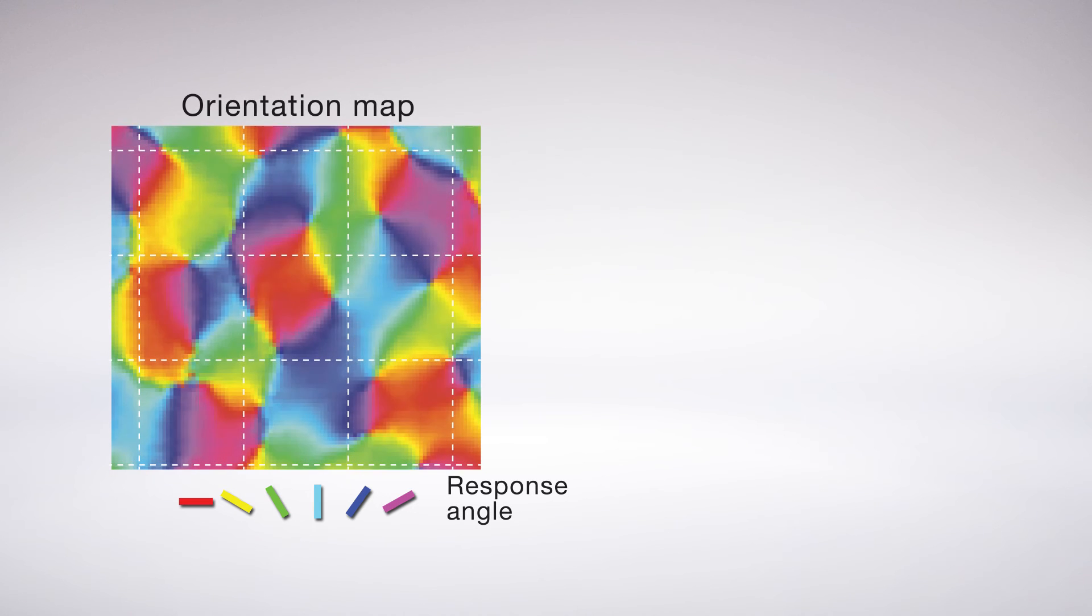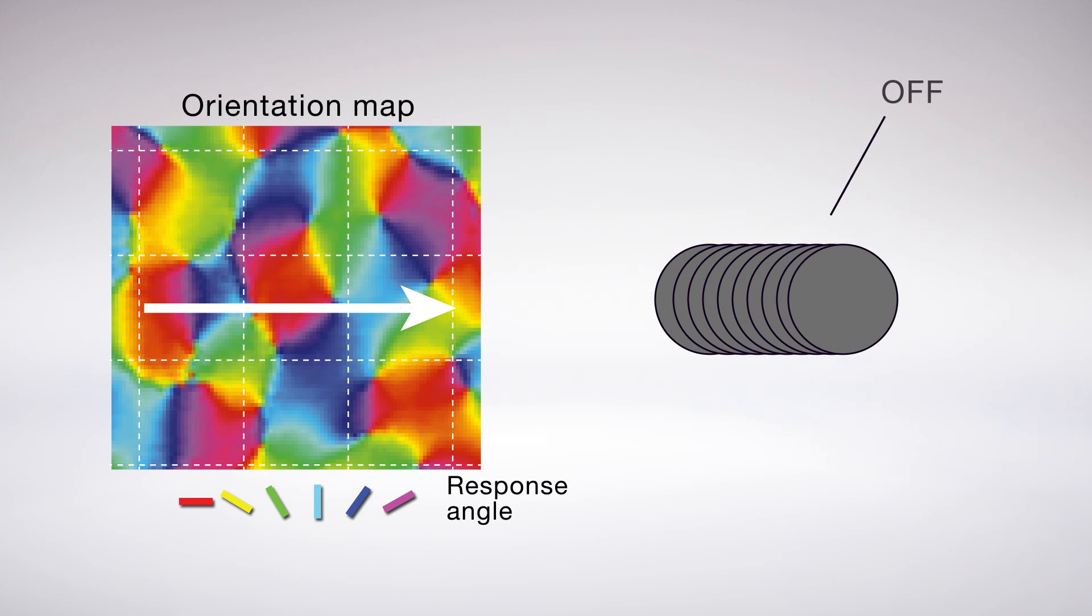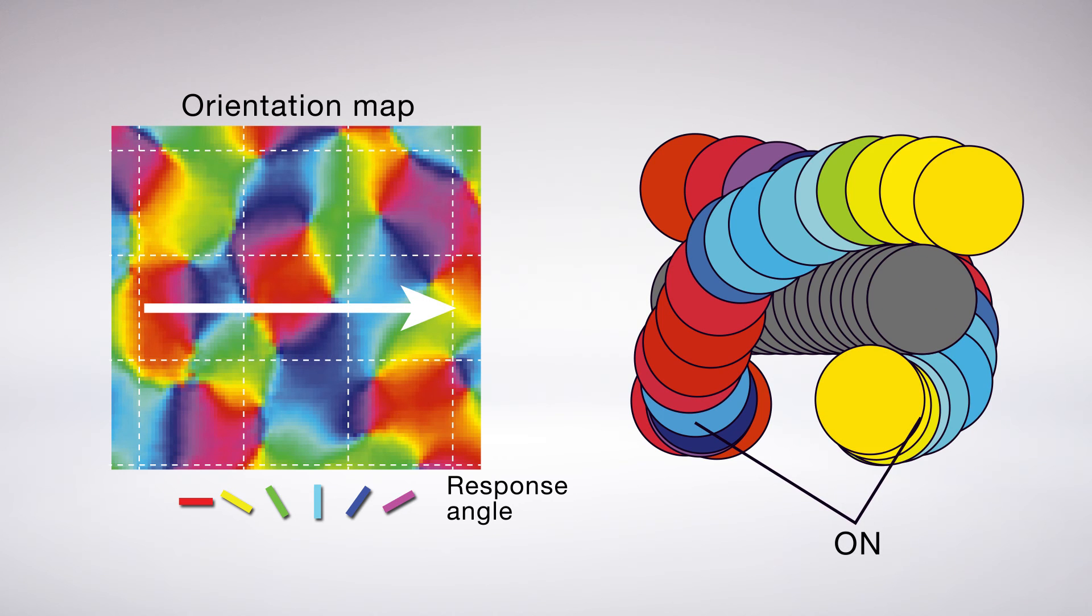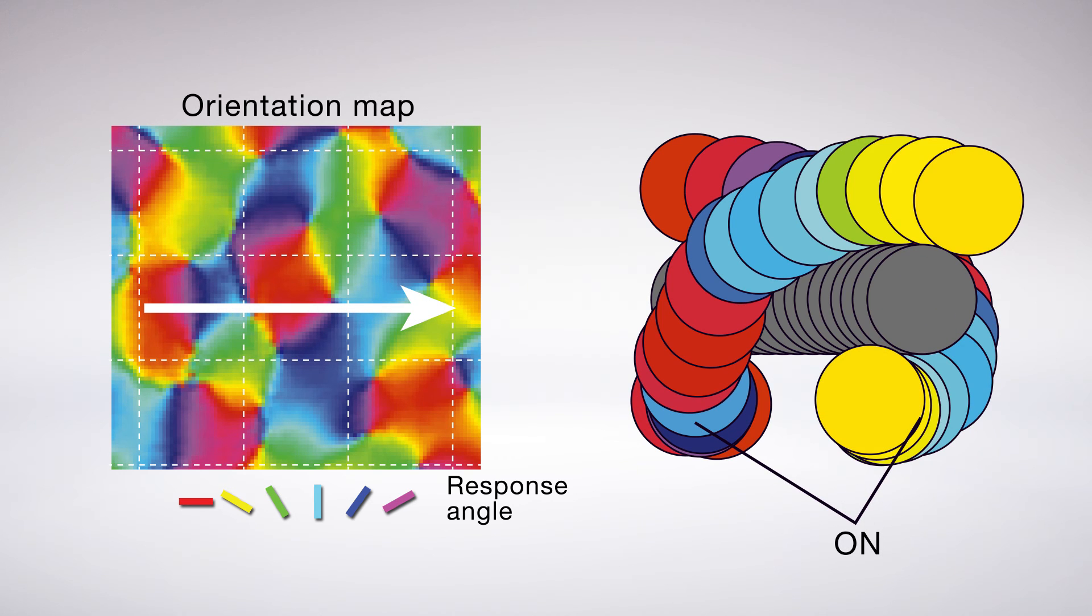As a result, if you sample columns of neurons in a straight line along the cortical surface, the region of visual space captured by the off responses also moves in a line. At the same time, the region of visual space captured by the on responses rotates around, creating the map of orientation preference.